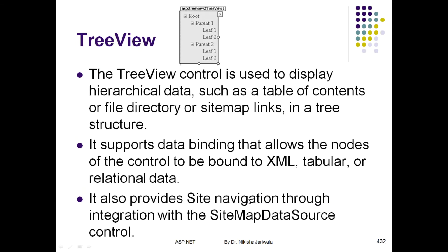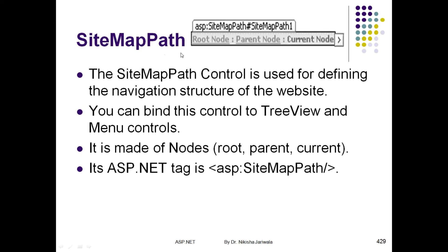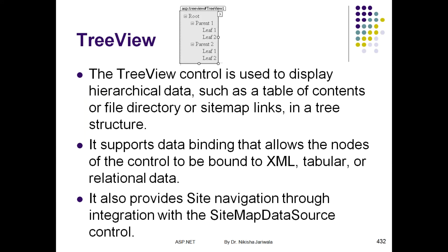Another navigation control is the TreeView control. You can see root node, parent node, and leaf node — the same concept that is available in SiteMapPath as root node, parent node, and current node. TreeView control displays in the form of a hierarchical structure. According to the root node it will display all the links in a tree-like structure. Like SiteMapPath, the TreeView control can also work with the web.sitemap file.